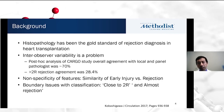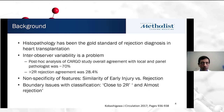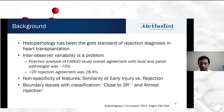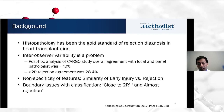As you all know, histopathology has been the gold standard for diagnosing rejection in heart transplantation, but inter-observer variability in making the diagnosis is a problem. A post-doc analysis from the CARGO study, which looked at agreement between local and a panel of pathologists to diagnose rejection, was only about 70%. As you all know, the CARGO study looked at ALOMAP as a non-invasive marker of rejection.